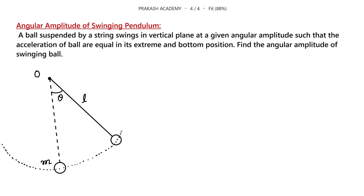Hello friends! In this video you will learn how to write the equation of motion when a pendulum is swinging in a vertical circle. The problem states: a ball suspended by a spring swings in a vertical plane at a given angular amplitude, such that the accelerations of the ball are equal at its extreme and bottom positions. We have to find the angular amplitude of the swinging ball.